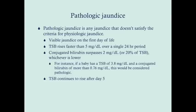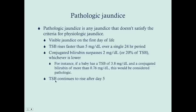Pathologic jaundice is any jaundice that doesn't satisfy the criteria for physiologic jaundice. This includes visible jaundice on the first day of life, a total serum bilirubin that rises faster than 5 milligrams per deciliter over a 24-hour period, or a conjugated bilirubin that surpasses 2 milligrams per deciliter or 20% of the total serum bilirubin, whichever is lower. For example, if a baby has a total serum bilirubin of 3.8 and a conjugated bilirubin of more than 0.76, that's pathologic. Also, if the total serum bilirubin continues to rise after day five, that's considered pathologic.